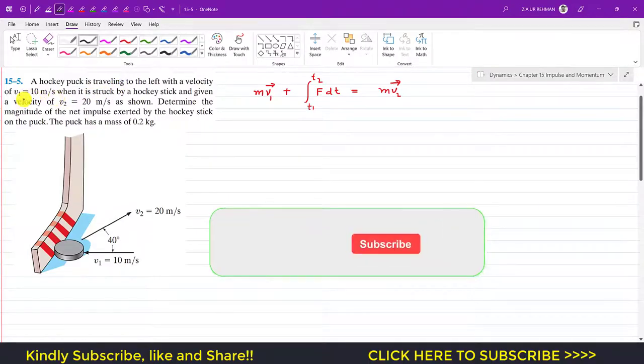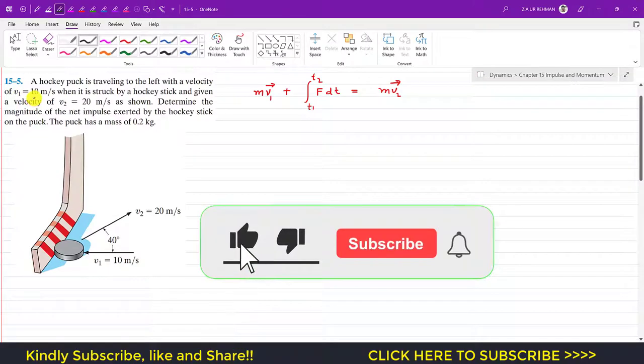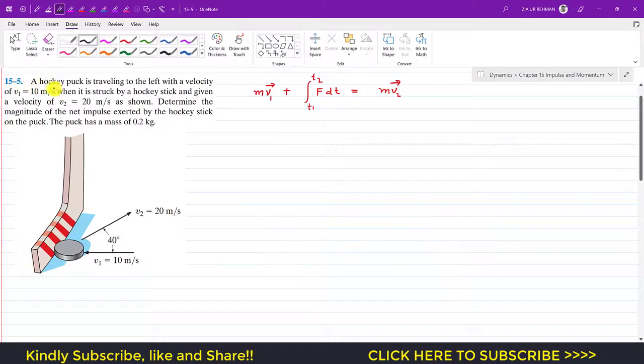Okay guys, I welcome you all to G Music. Please subscribe to my channel if you haven't done it yet. Now we are going to solve this problem. It says that a hockey puck is traveling to the left with a velocity of 10 meters per second.